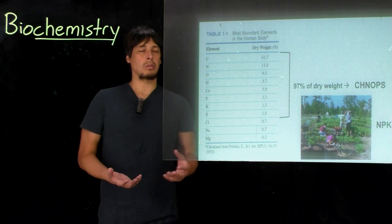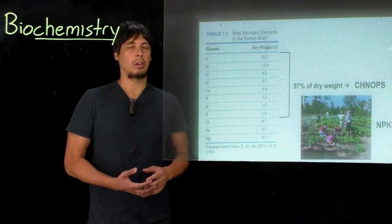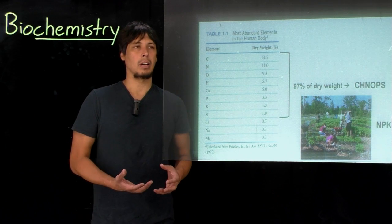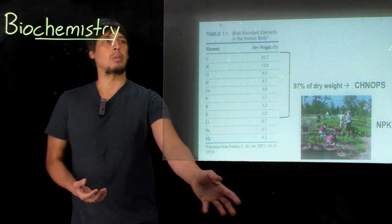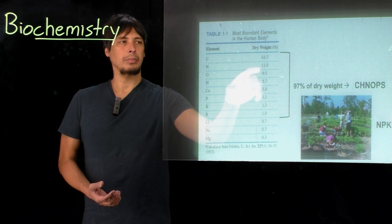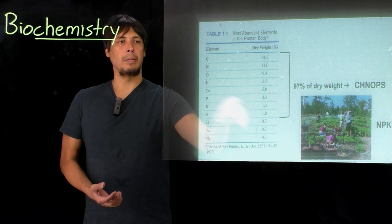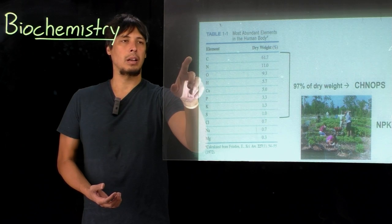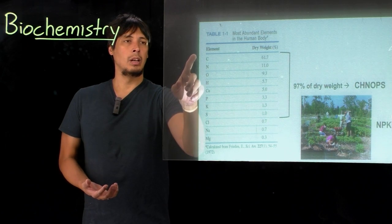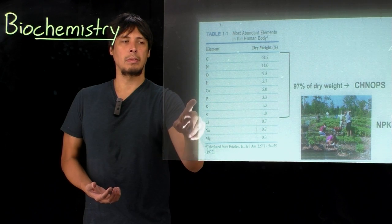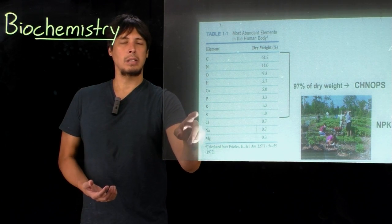Before we start, it's really instructional to look at what are the common elements that we see amongst biomolecules. The table here on the right shows the most abundant elements in the human body by percentage of dry weight. So the top elements that compose biology in general are carbon, nitrogen, oxygen, hydrogen, calcium, phosphorus, potassium, and sulfur.